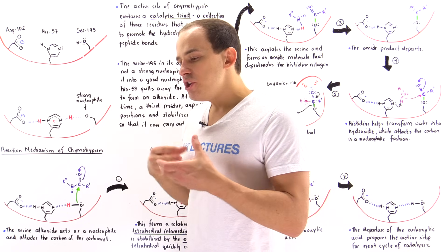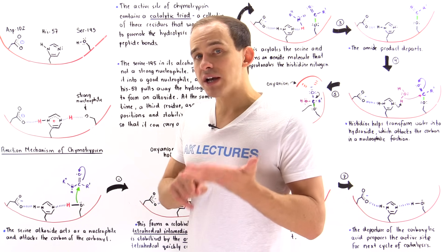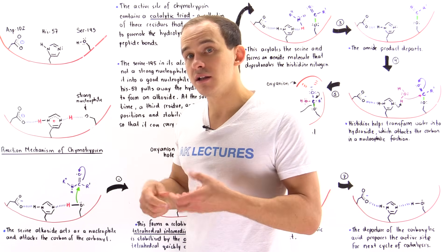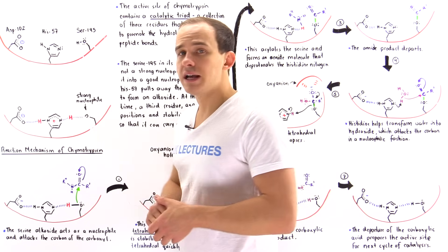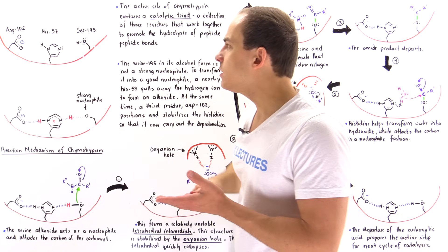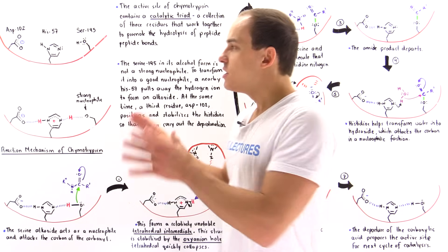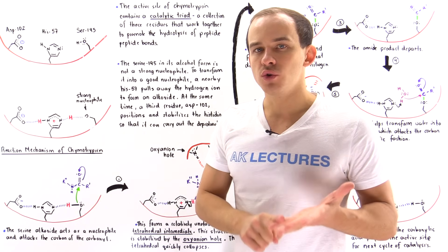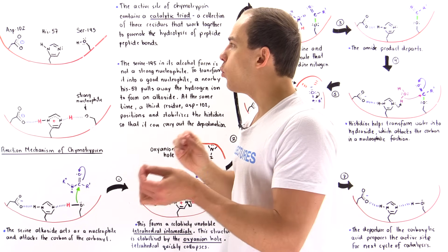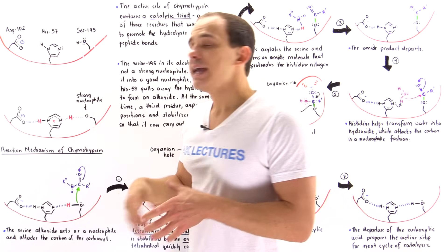Let's begin with serine-195. Chymotrypsin is an example of a serine protease, meaning it's ultimately the serine residue inside the active site that acts as a nucleophile and will attack the carbon of the carbonyl of that peptide bond. The problem is that the side chain of serine is in its alcohol form, and alcohols aren't very good nucleophiles. So this alcohol is not a strong nucleophile and will not be good enough to attack that peptide bond. The histidine and aspartate must work together to transform this serine into a strong nucleophile.